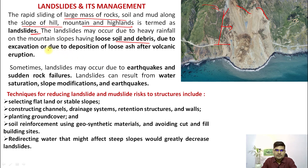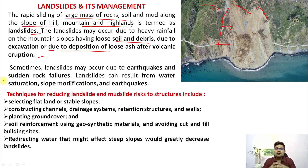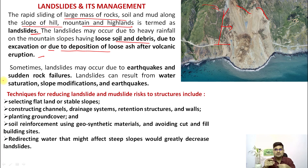Landslides can also occur due to deposition of loose ash after volcanic eruption, and sometimes due to earthquakes because of the sudden shake in the earth. Landslides can be a resultant of water saturation as well as slope modifications caused by human actions, natural reasons, and earthquakes.